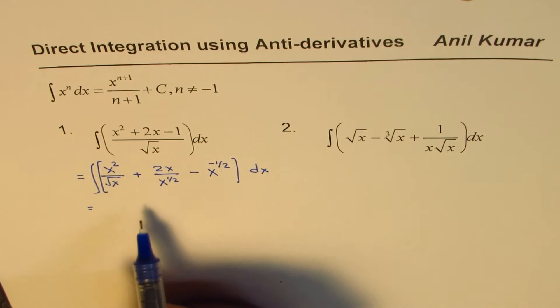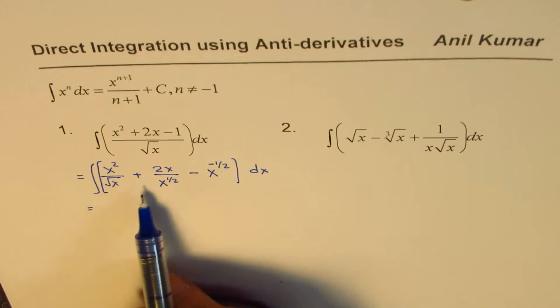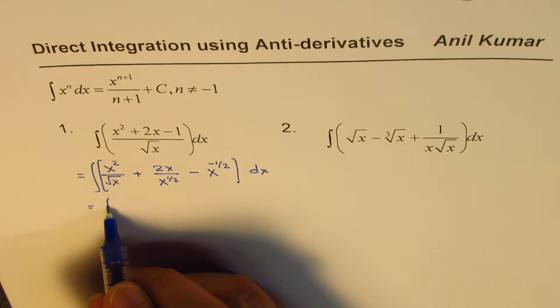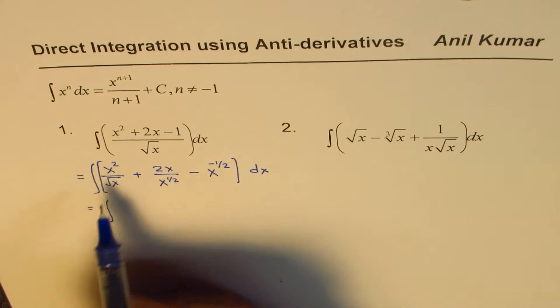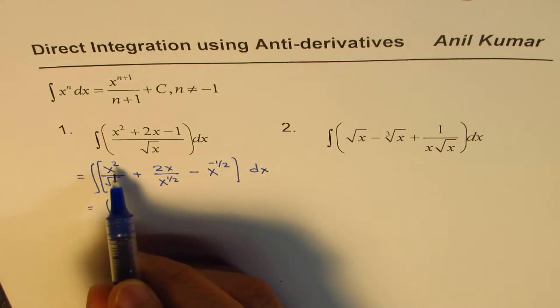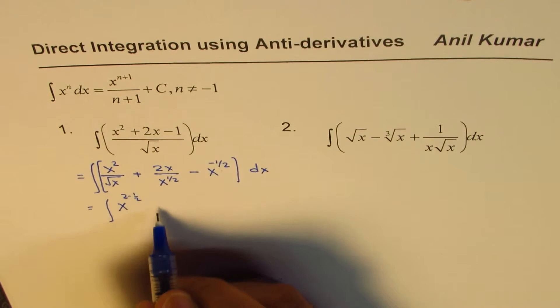Now we apply the property of integrals, that is, sum and difference is sum and difference of their integrals. Okay. So you could simplify this. When you say x squared over x to the power of half, you could write this as x to the power of 2 minus half. Let me write 2 minus half first, and then we'll simplify this.